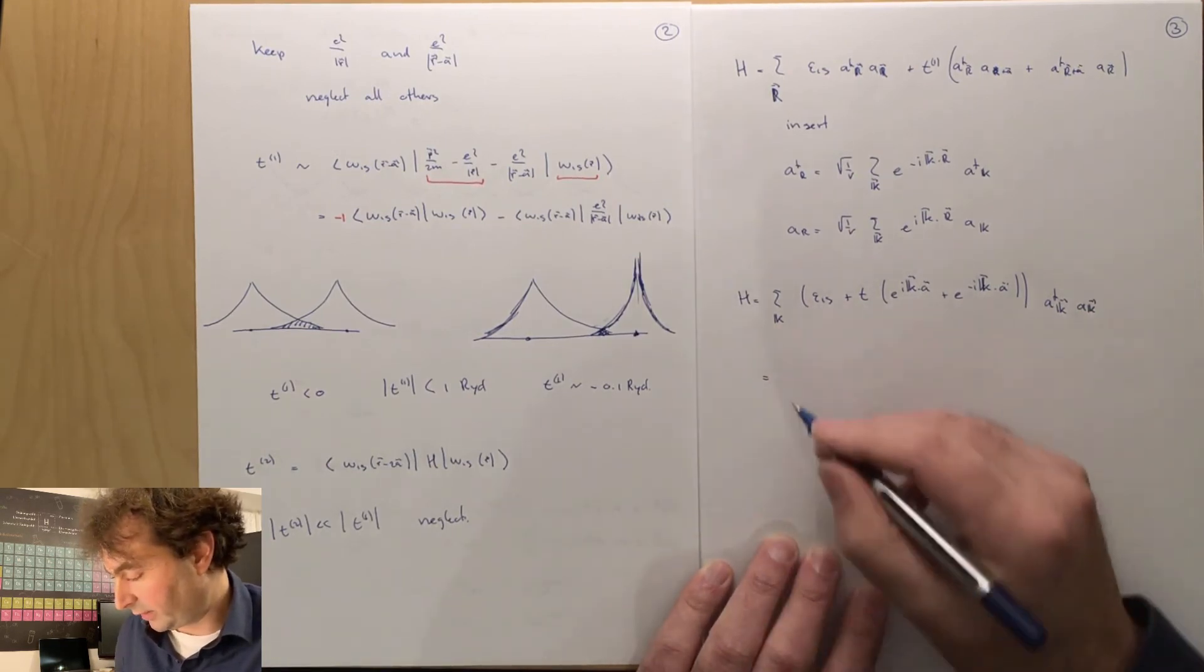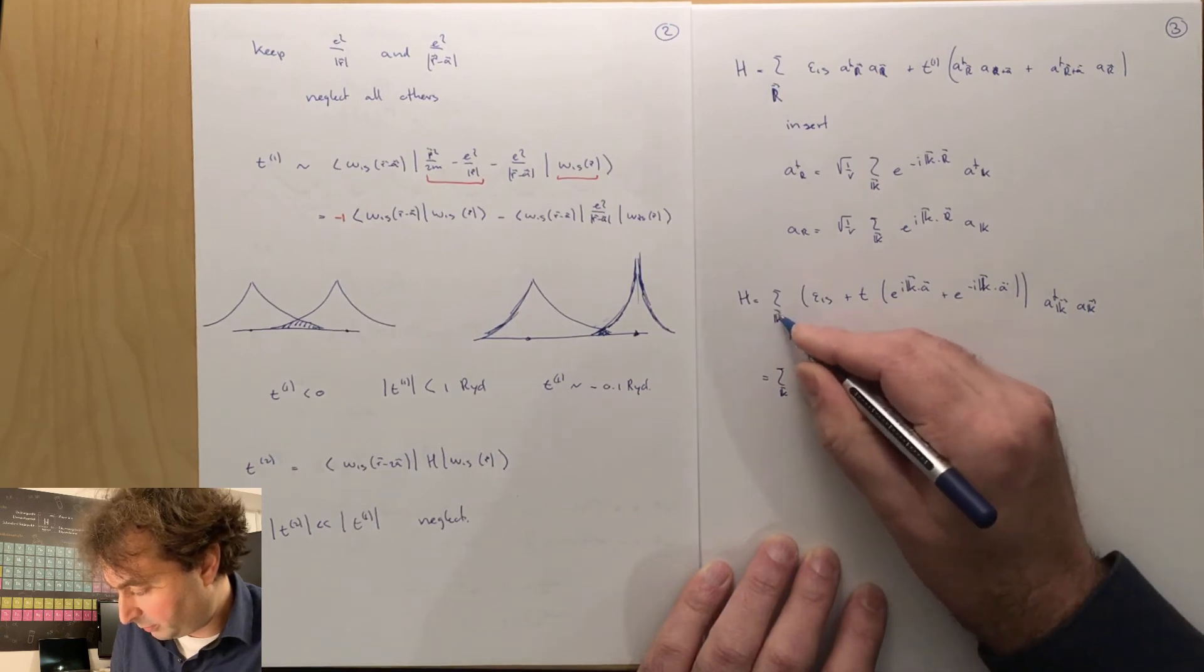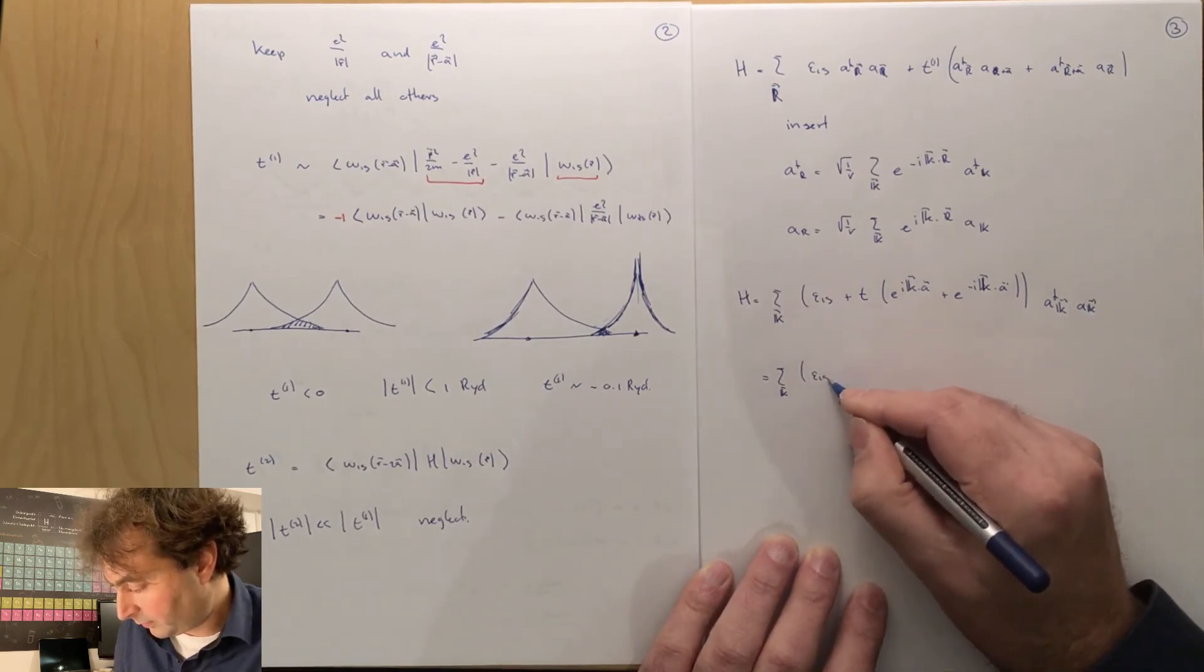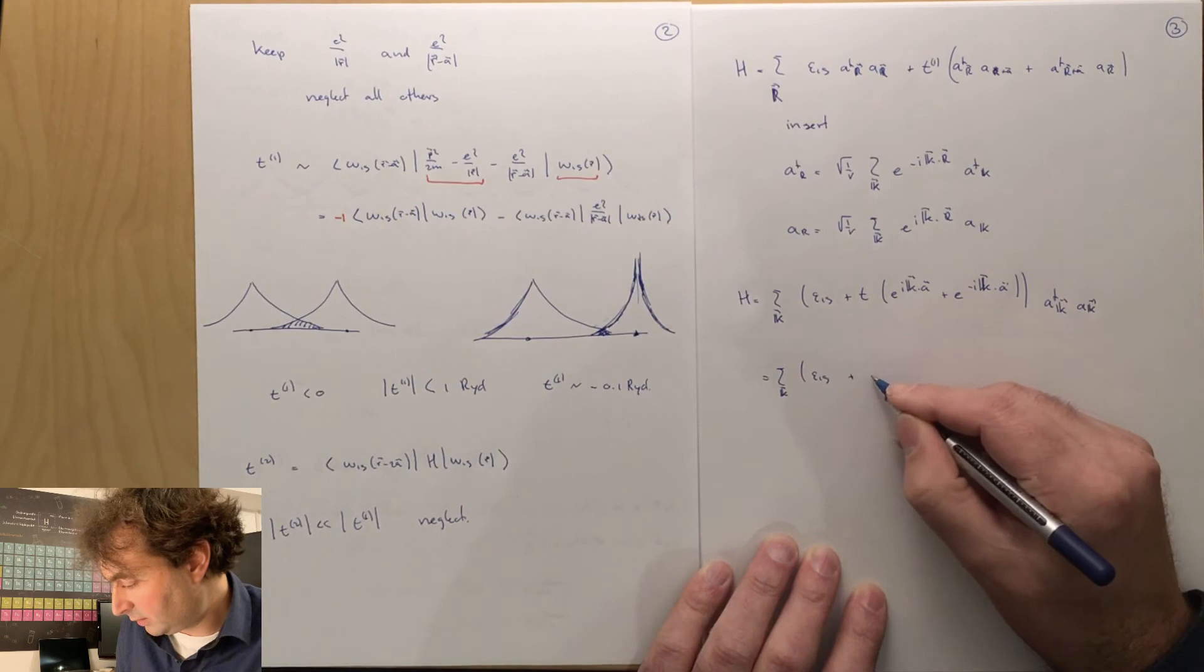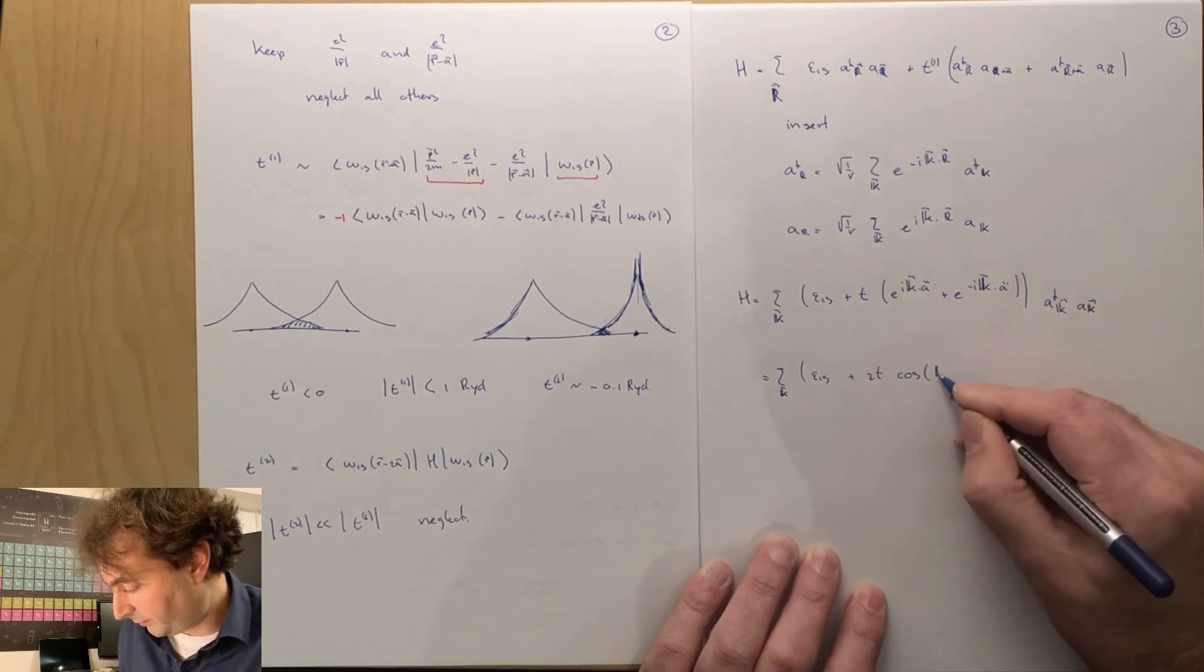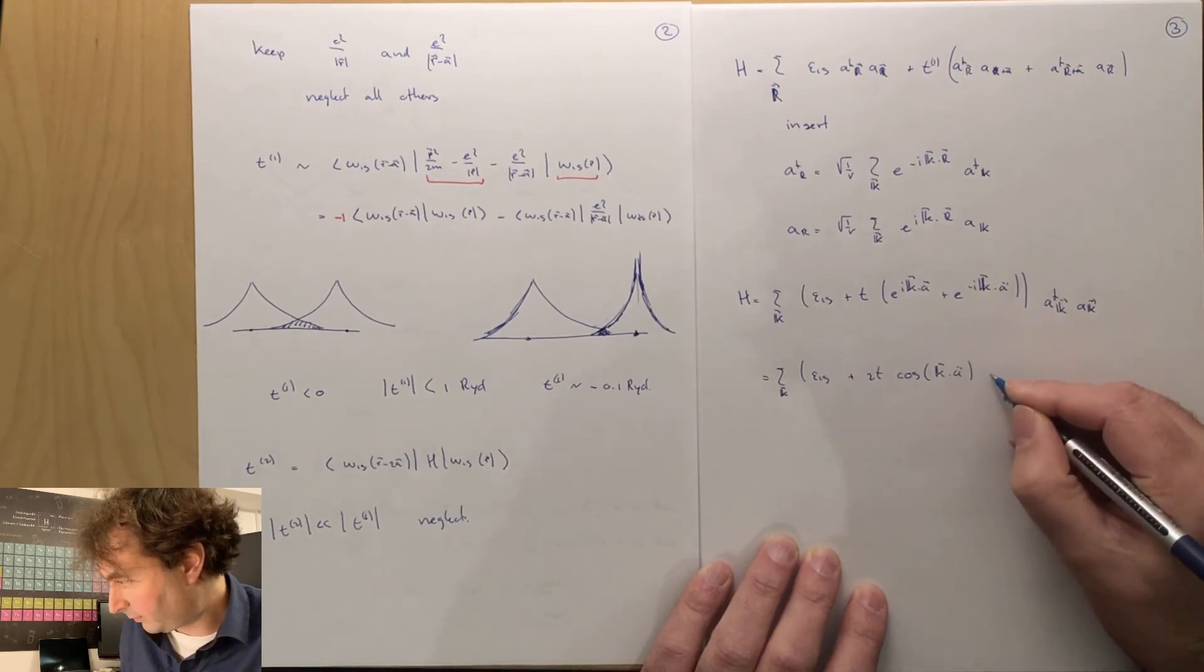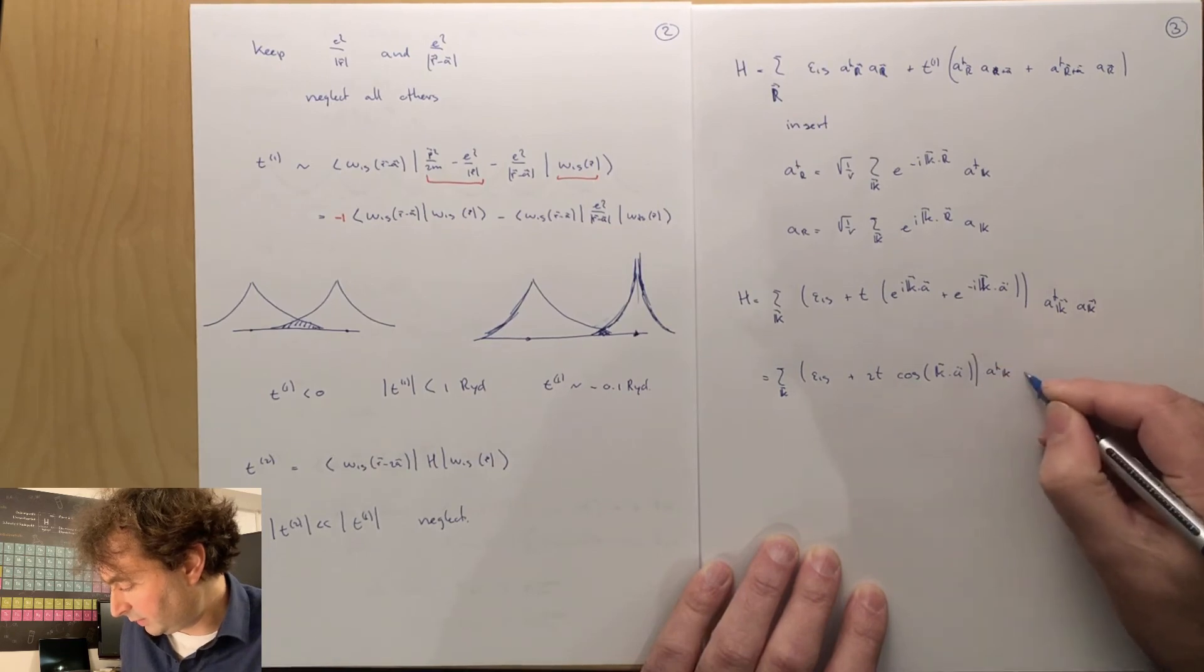And this, of course, we can write as a cosine, so it's a sum over all crystal momentum, epsilon 1s plus 2t cosine k a, a dagger k, ak.